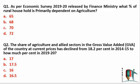Question 1: As per Economic Survey 2019-20, released by the Finance Ministry, what percent of rural households is primarily dependent upon agriculture? The answer is around 70 percent. You should remember this fact — 30 percent is dependent upon other activities, and 70 percent of rural households are dependent upon agriculture only.